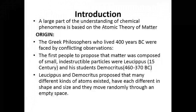In the introduction to the description of the atom, we know that a large part of understanding chemical phenomena is based on the atomic theory of matter. We have already discussed that matter is anything which has mass and occupies space. Now we have to discuss the origins of the atom — in the very beginning, Greek philosophers who lived 400 years BC were faced with conflicting observations.